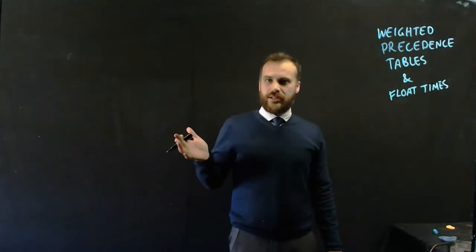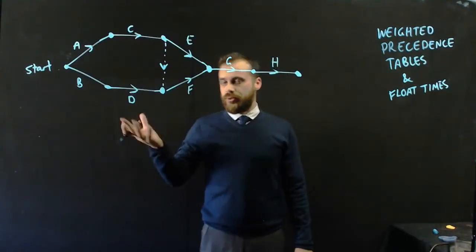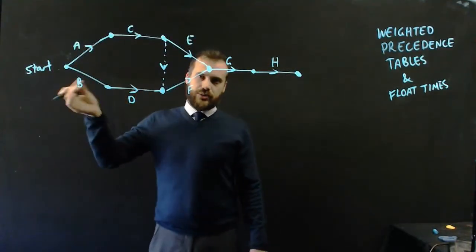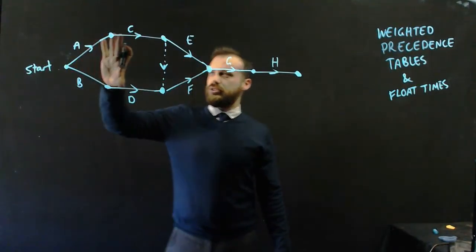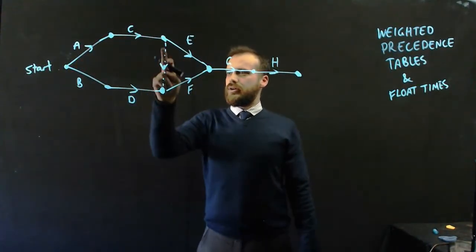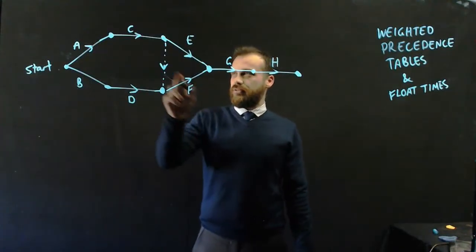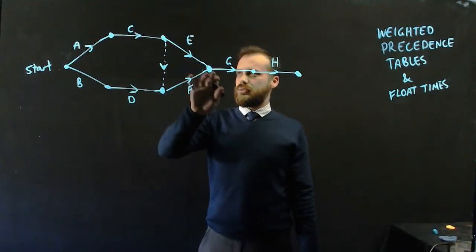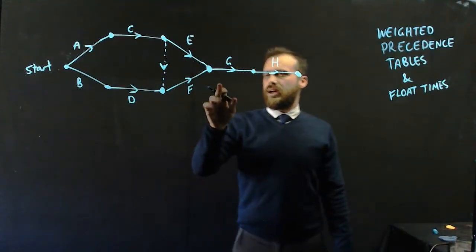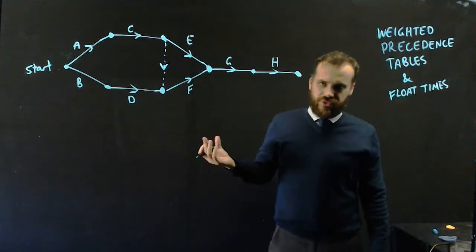First of all, we're going to need a network, and this is the activity network that we're going to use. How does it work? Well, you can do A and B, you can start off with those, then you can do C and D. Now, you can't start F until C is done, that's what that dummy activity is there for. You can start doing E as soon as C is done, and then G, and then H, and then you're finished.